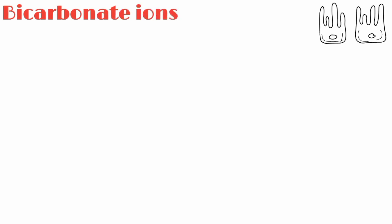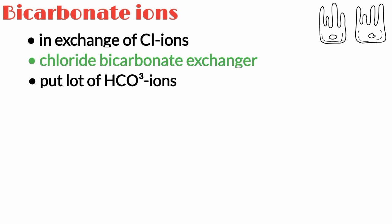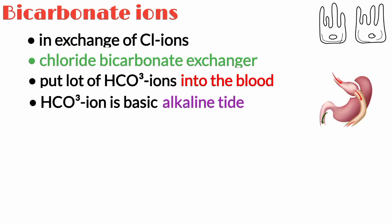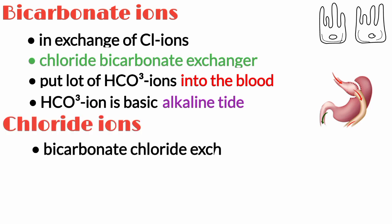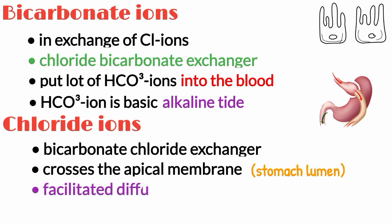The remaining bicarbonate ions are pumped out of parietal cells in exchange for chloride ions, using a chloride-bicarbonate exchanger. These exchanges put a lot of bicarbonate ions into the blood. Since bicarbonate is basic, this causes what is known as the alkaline tide — a tide of alkalinity in the blood. The chloride ions that come into the cell by way of the bicarbonate-chloride exchanger then cross the apical membrane of the parietal cell and go into the stomach lumen by way of facilitated diffusion.